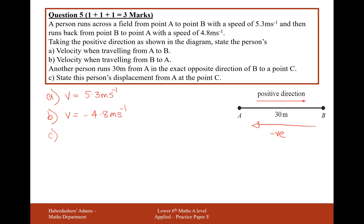Part C, another person runs 30 meters from A in the exact opposite direction to B to a point C. State this person's displacement from A at the point C. The displacement here, S, if right is positive, it's moved left, then the displacement here is minus 30 meters.